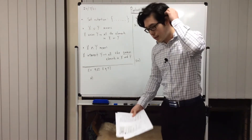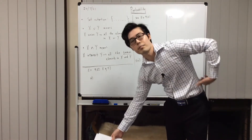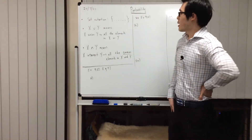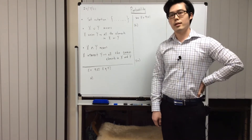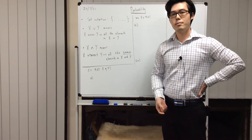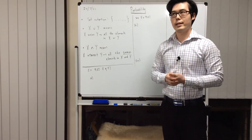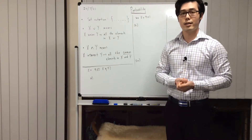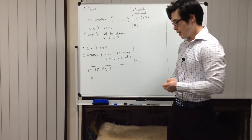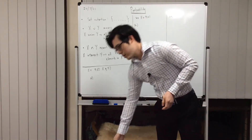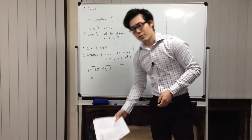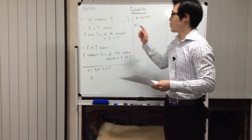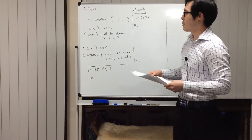We're going to start a new topic — probability — today. I want to go through two exercises because you'll find most of the exercises in probability are basically a review of what you've done in year 9 and 10. There are a couple of new symbols that you need to be familiar with from now on, which I've written up here, so let's have a look.